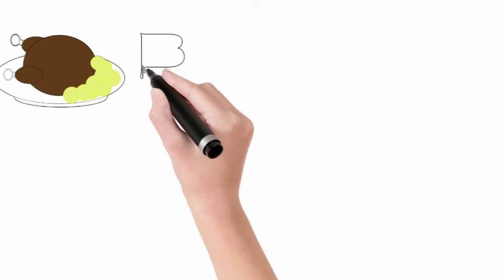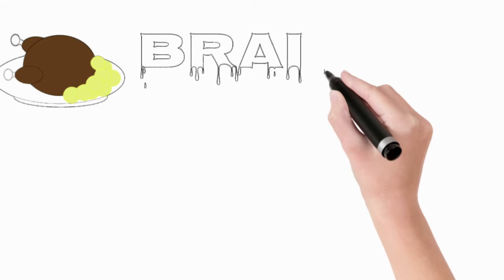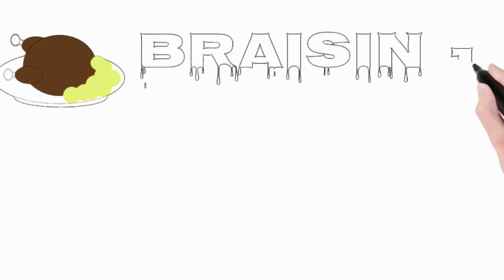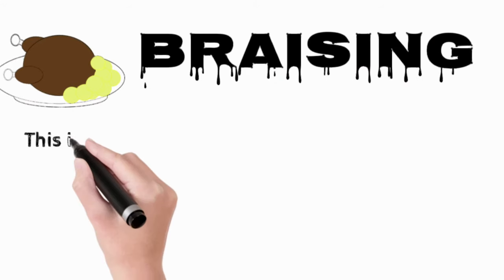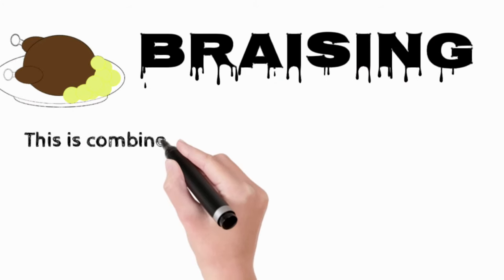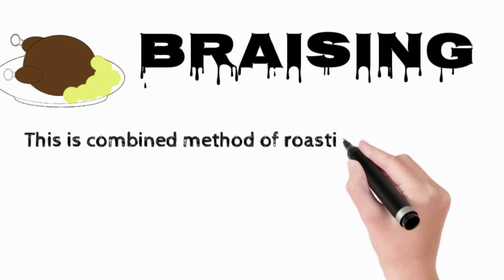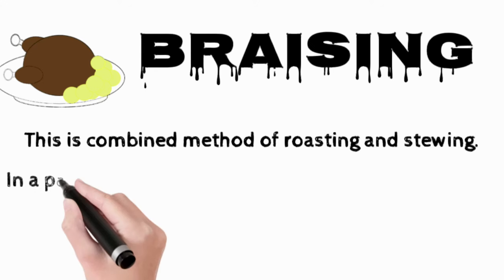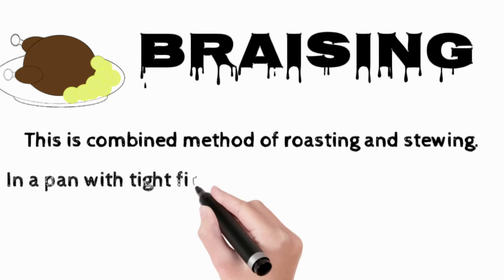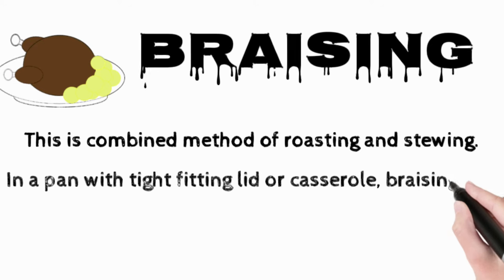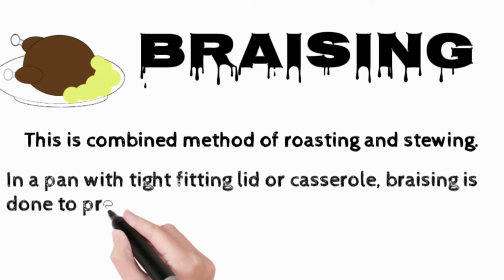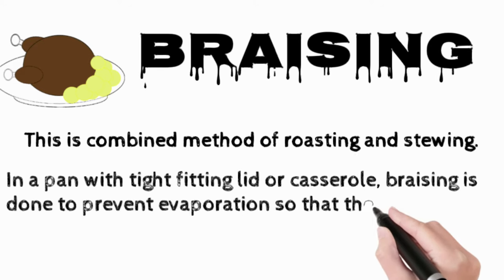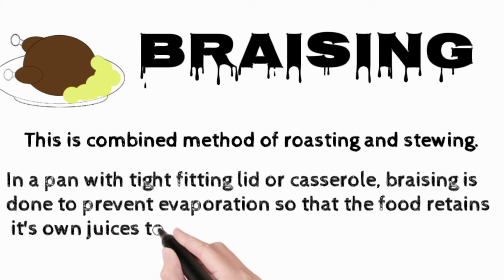Braising: this is a combined method of roasting and stewing, done in a pan with a tight-fitting lid or casserole to prevent evaporation, so that the food retains its own juices together with some flavor. For example, meat is first browned in a little fat and then cooked in a sealed pan to retain juice and flavor.